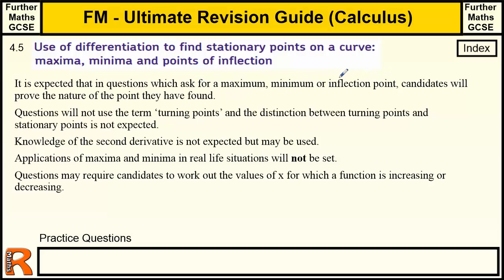There is another way of doing it: if you think about what the gradient is before and after the stationary point, you can determine whether it's one of these three things. The term 'turning points' is not going to be used because turning points are subtly different from stationary points. Turning points are maximums and minimums because they turn around. Inflections are when the gradient goes through zero and then keeps going, so that's not a turning point, but inflections are stationary points because the gradient is zero at that point.